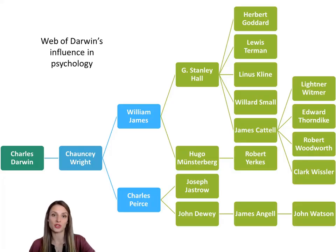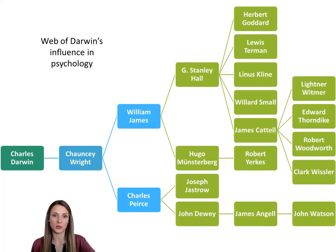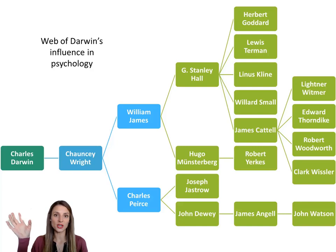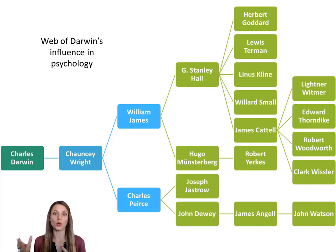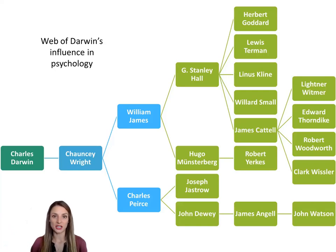One of his greatest contributions was his influence on many of the other psychologists we'll learn about in this class. I have a web here of all the different people that he influenced. He influenced a man by the name of Chauncey Wright, who wrote a lot about Darwin's ideas. Wright then met William James and Charles Pierce. William James then influenced Hall, who influenced Terman, Small, and Cattell — and the list continues.